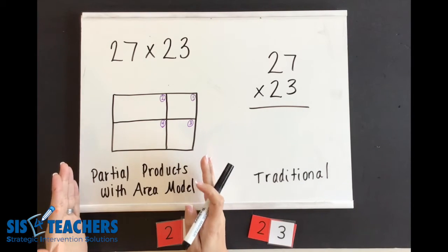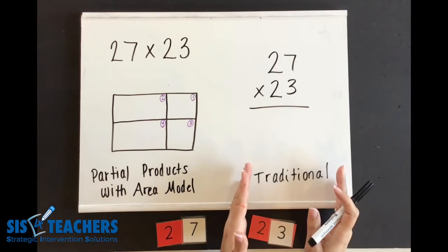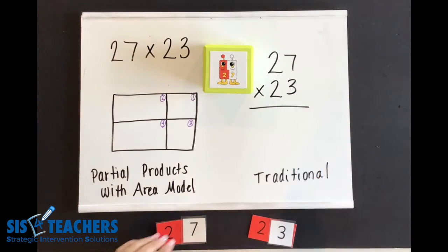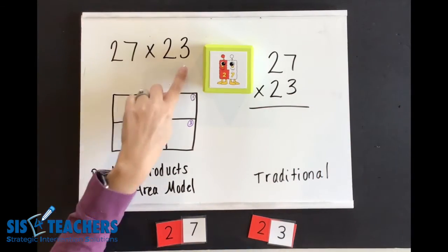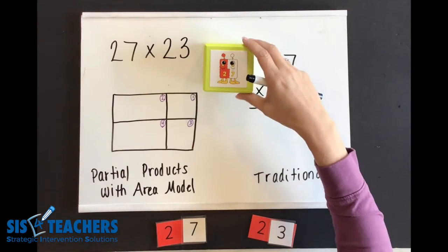I'm going to first explain the partial products with the area model and why it will help students to have the place value understanding. We're going to use one of our characters from our math mites which is the value pack to do this. We're going to look at the value of each of these numbers which is going to help us to understand the traditional.